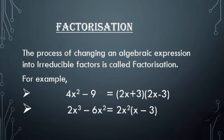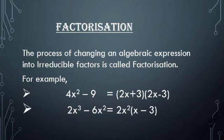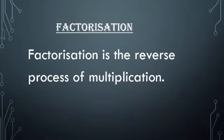Another example: 2x³ − 6x² = 2x²(x − 3). Here, 2x² and (x − 3) are the factors of 2x³ − 6x². In other words, we can say that the product of factors gives the given polynomial. In fact, factorization is the reverse process of multiplication.